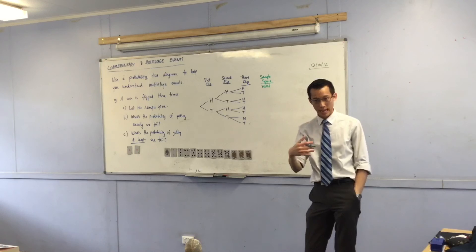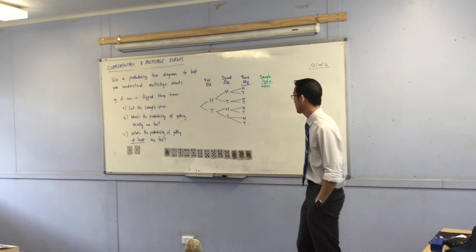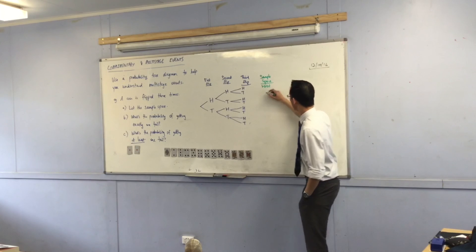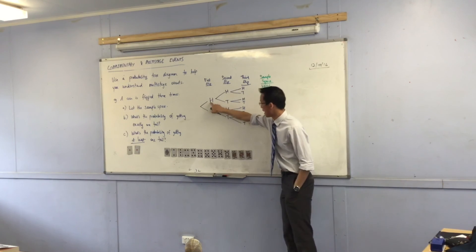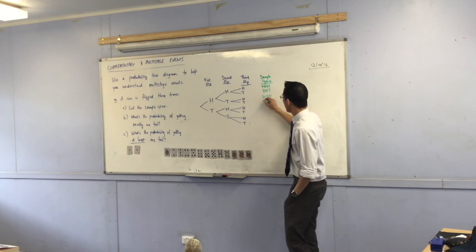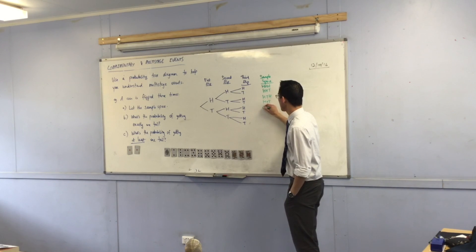If I just keep on going down, that'll produce a nice systematic list for me. Head, and then head, and then tail. What's this one? Head, tail, head. Head, tail, tail, and you get the idea. You can fill out all of them in this way.